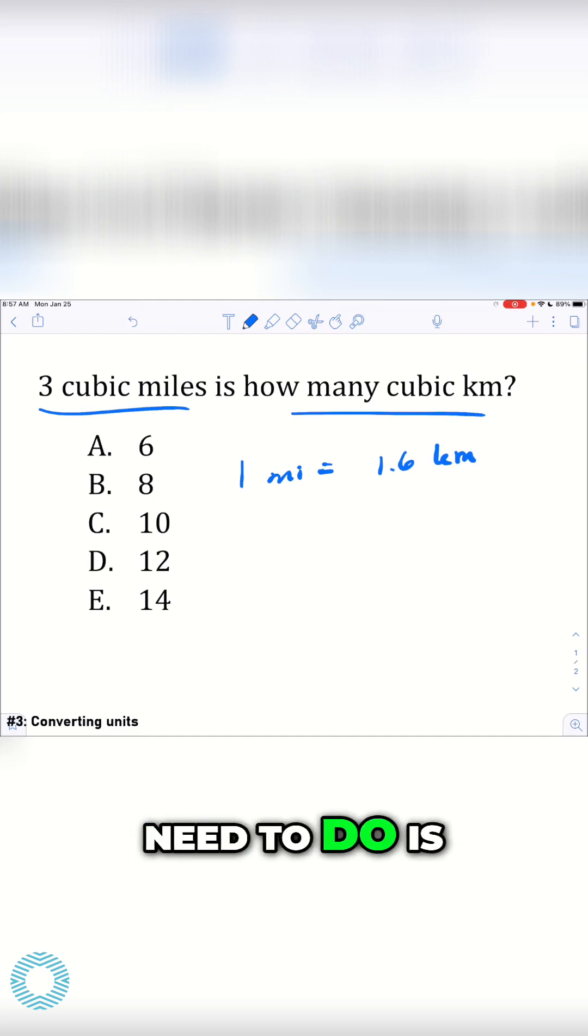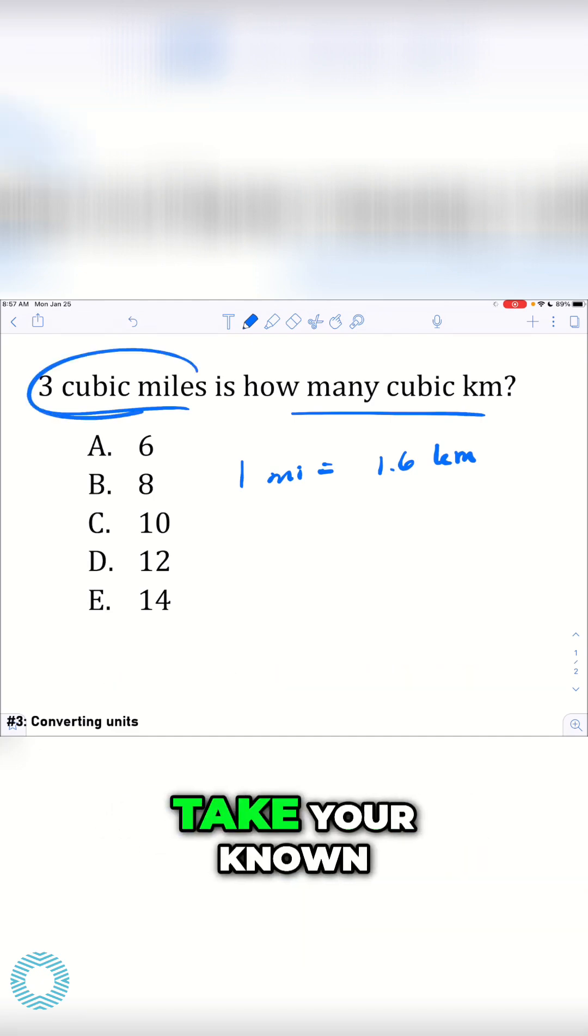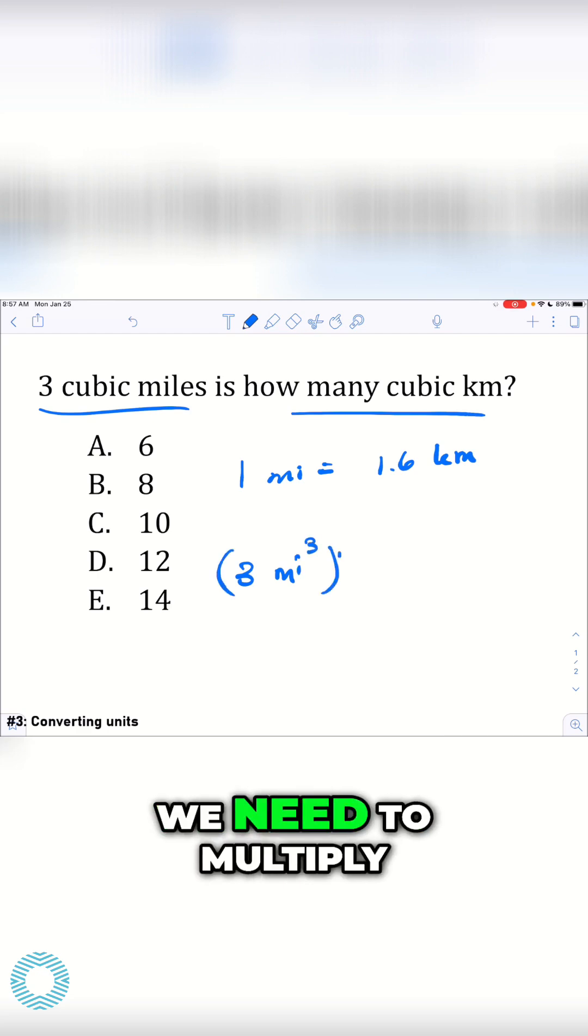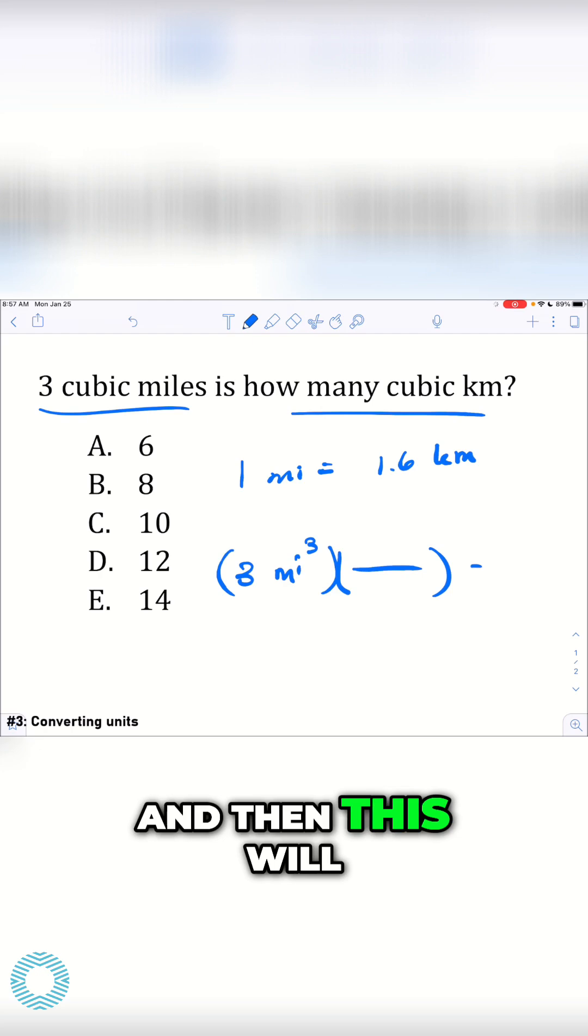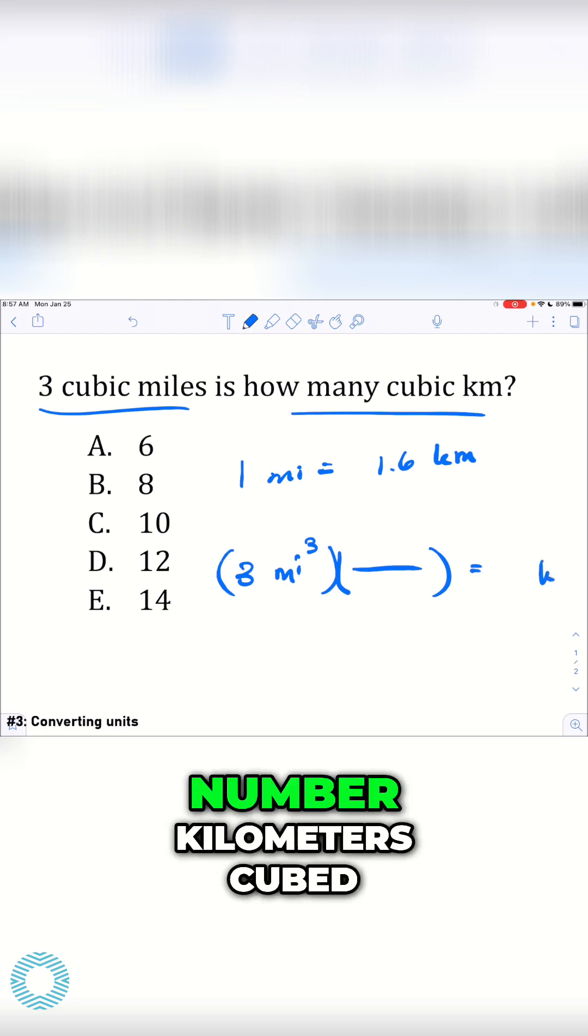The second thing we need to do is write out an equation. Now, the way you write the equation is you take your known, so three miles cubed. We need to multiply it by some fraction, which I'll write here, and then this will end up giving us an answer of some number kilometers cubed.